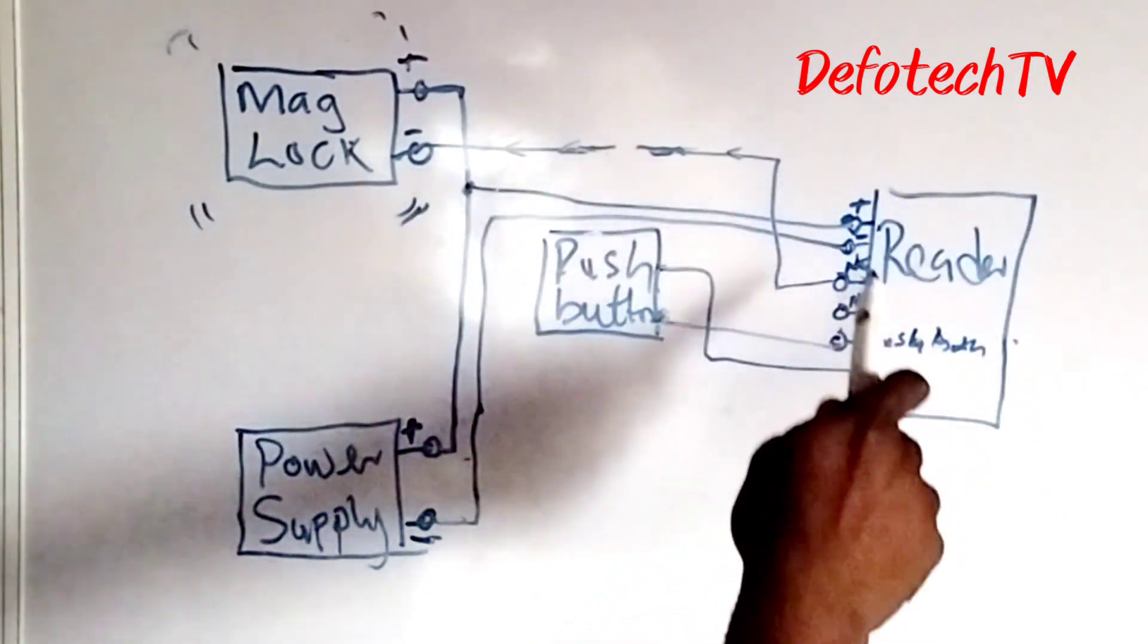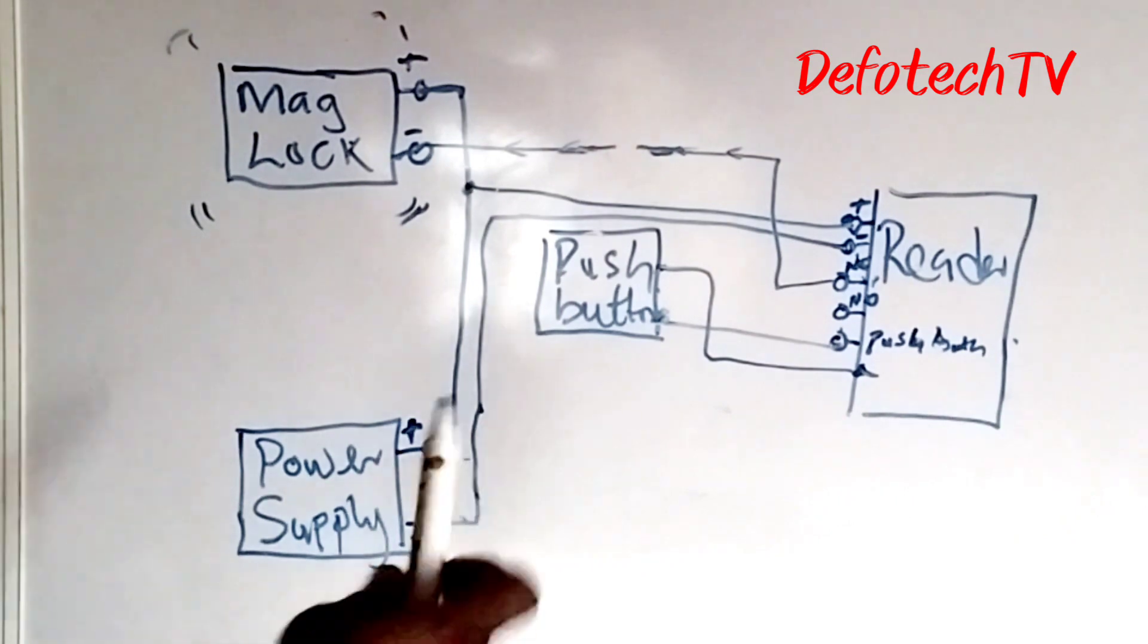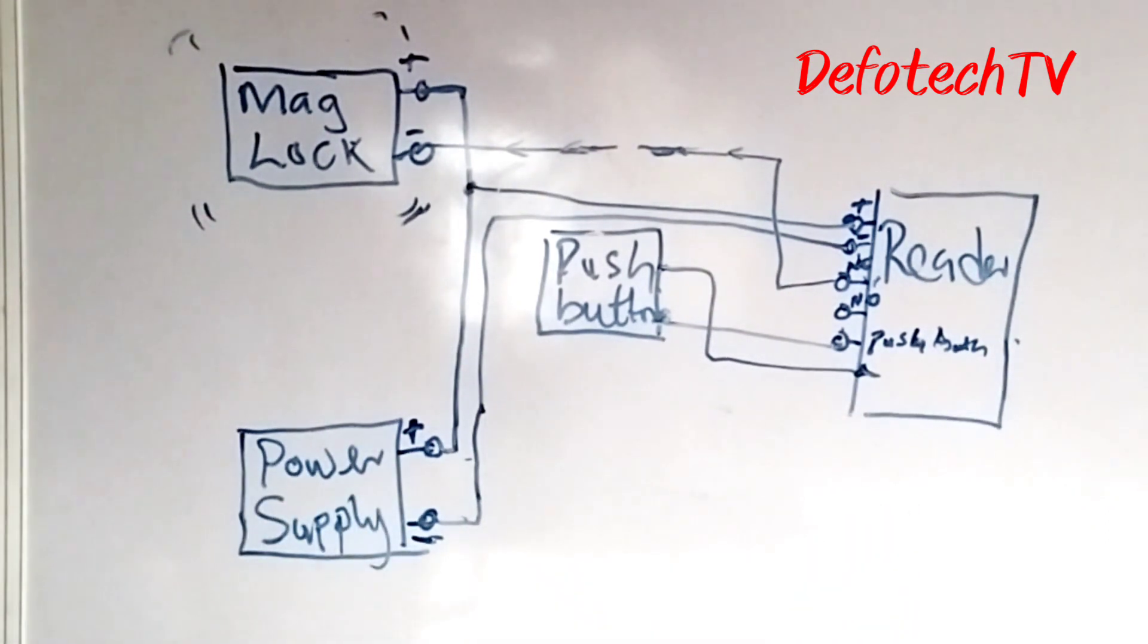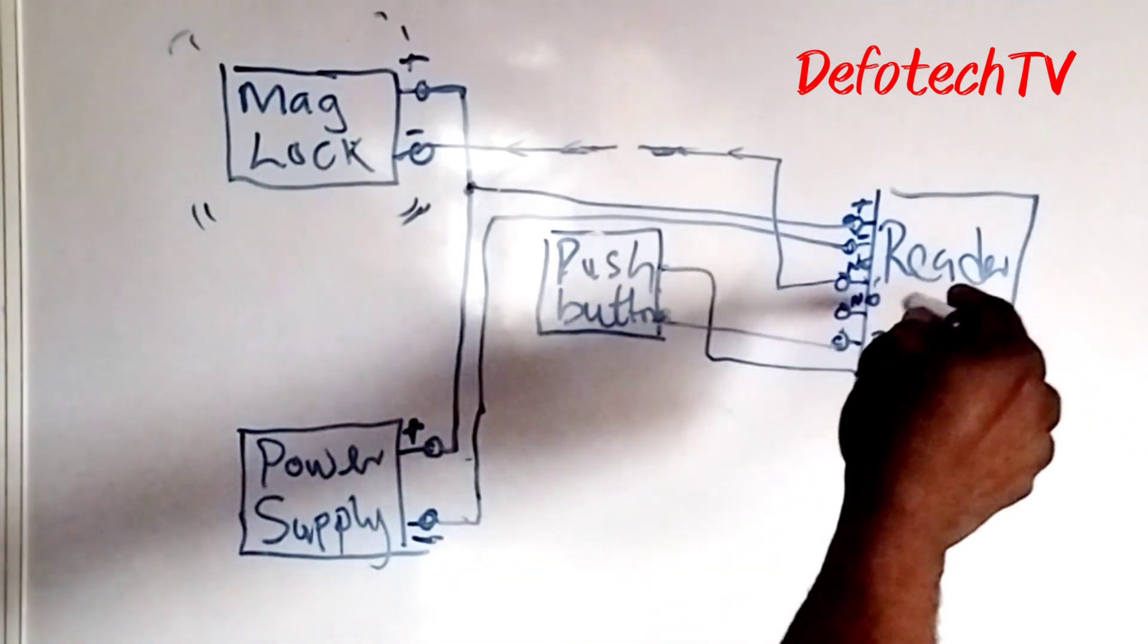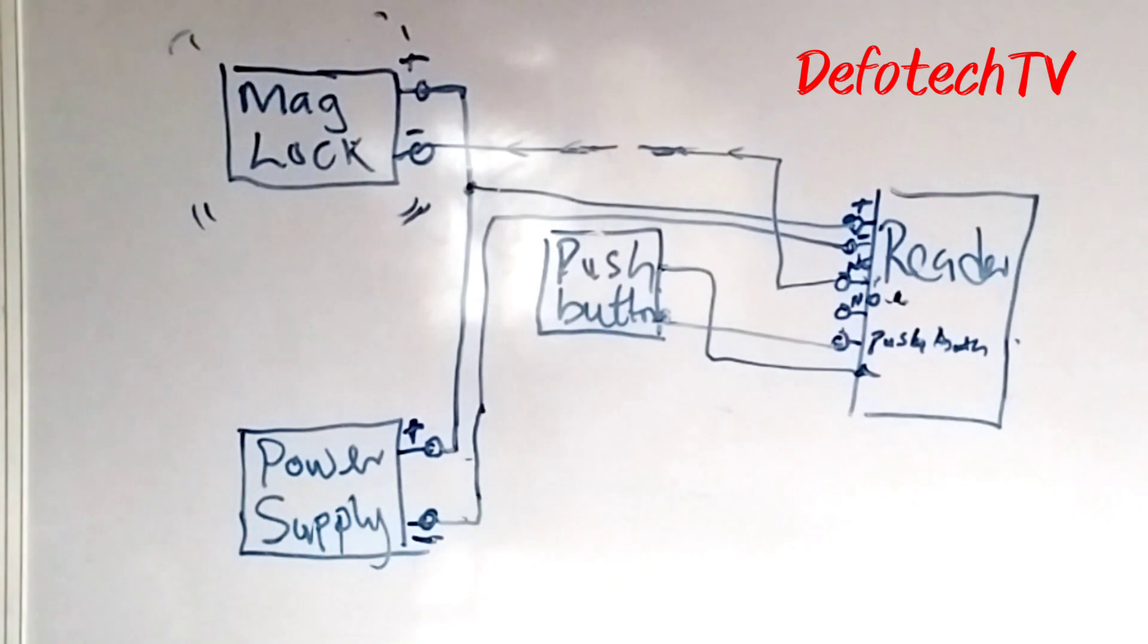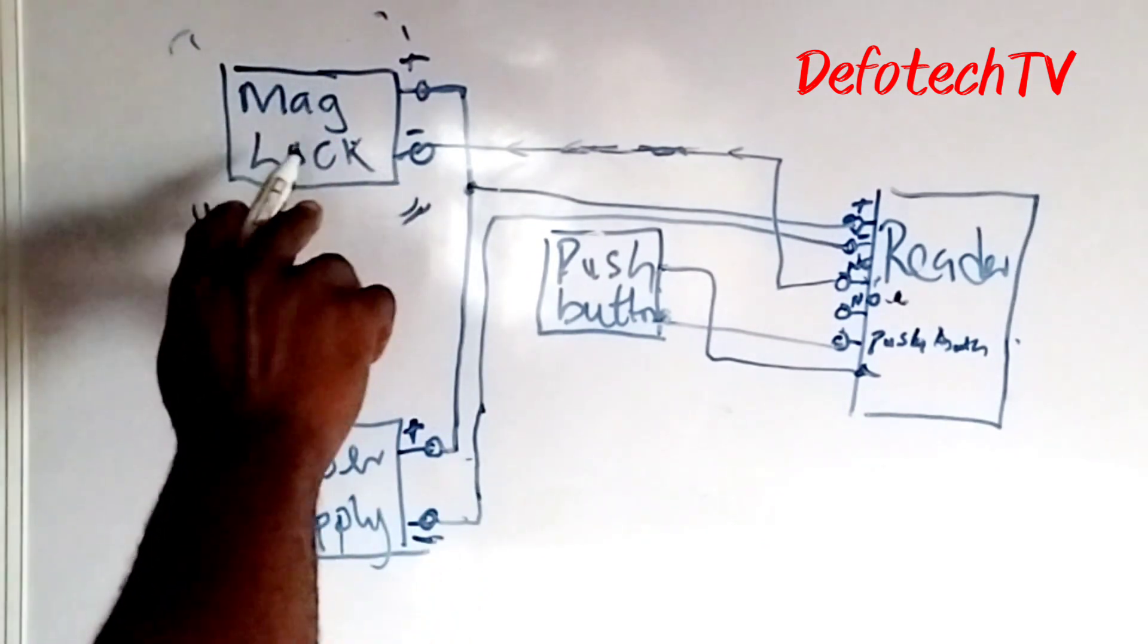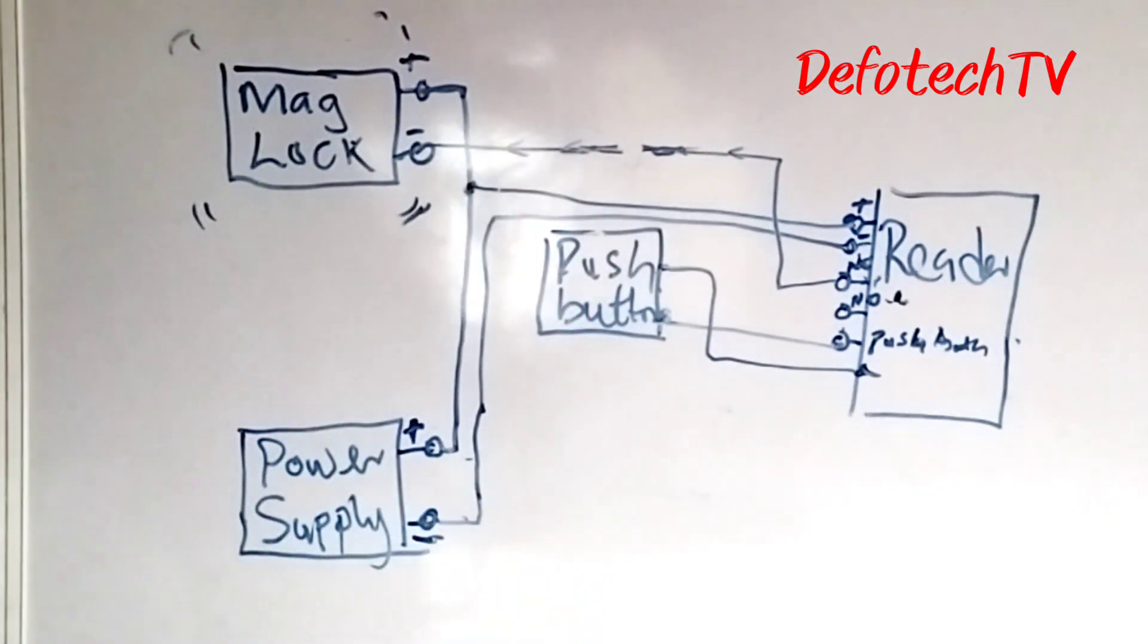Now for the push button, like I said, from your reader you have your positive, you have negative, you have normally close, you have normally open, you have common, you have a push button, you have alarm. Just like that, there are different terminals. But from your push button, you came from a push button comes to the position of the push button on this reader. Therefore, any time you push this button, send signal to this guy. This guy would switch this contact here. It will switch this contact. Normally open releases. The normal close becomes open. Open becomes closed.